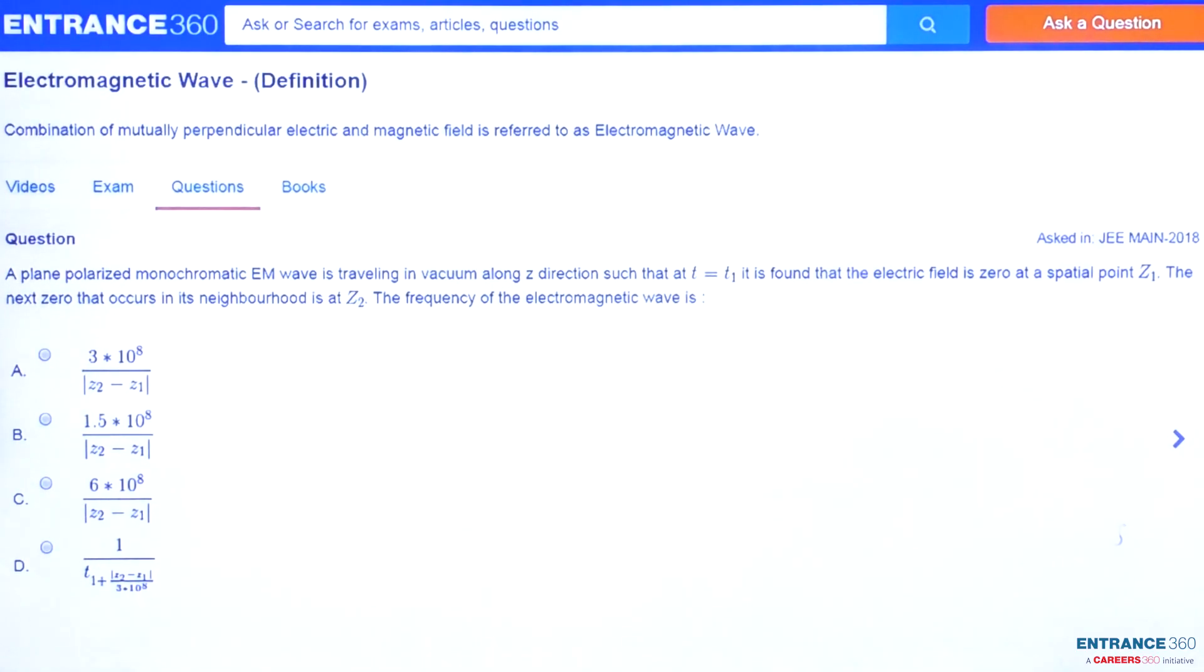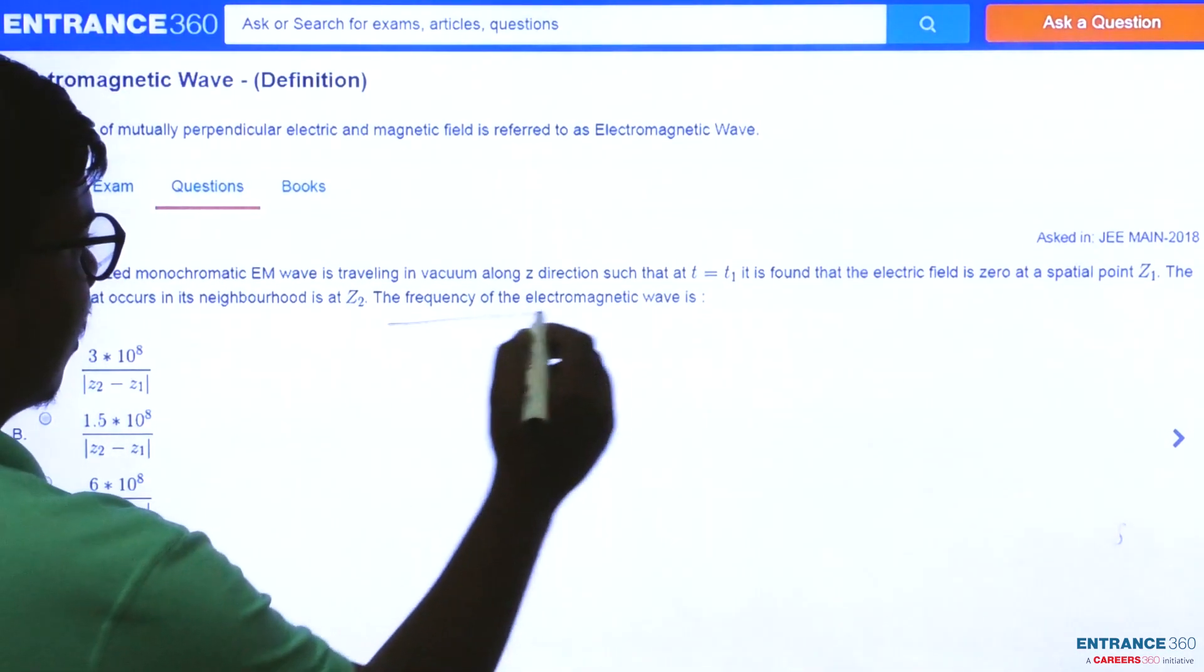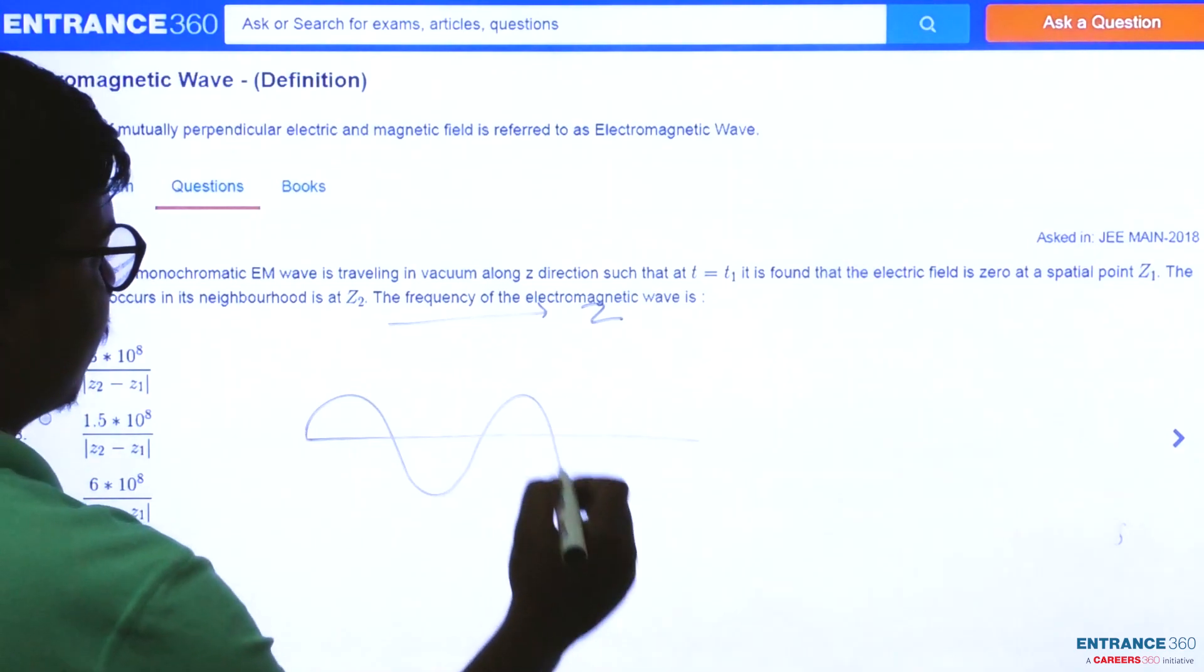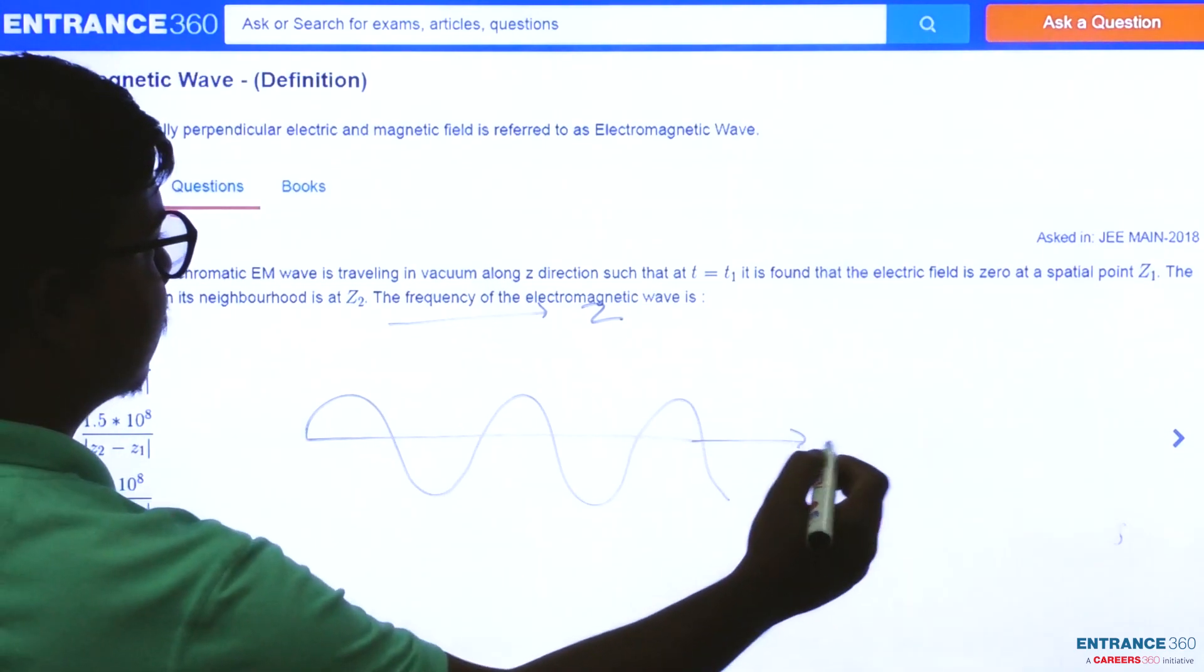The question says a plane polarized monochromatic electromagnetic wave is traveling along z direction. So let's suppose we have a wave which is traveling along z direction.